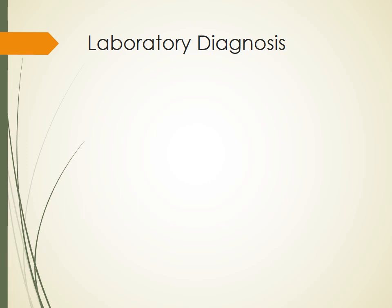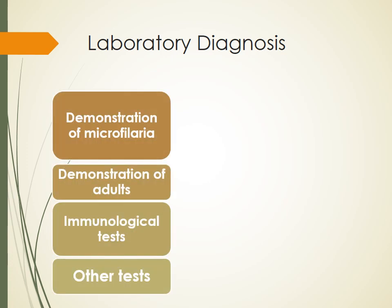Today we start with the most important thing: laboratory diagnosis of lymphatic filariasis. There are various methods by which we can diagnose this. First is demonstration of microfilaria — if you can demonstrate microfilaria in the peripheral blood you can diagnose it. Adults can be demonstrated by radiological or other means. There are also immunological and serological tests for detection of antibody or antigen.